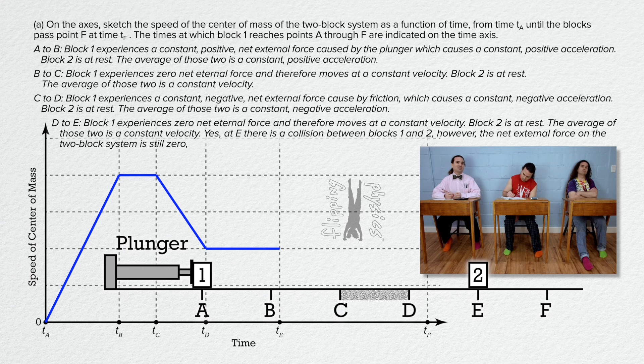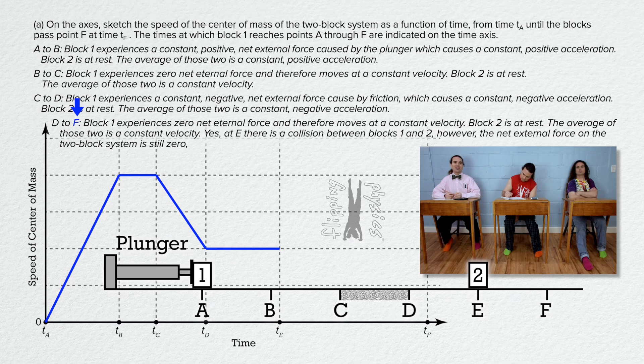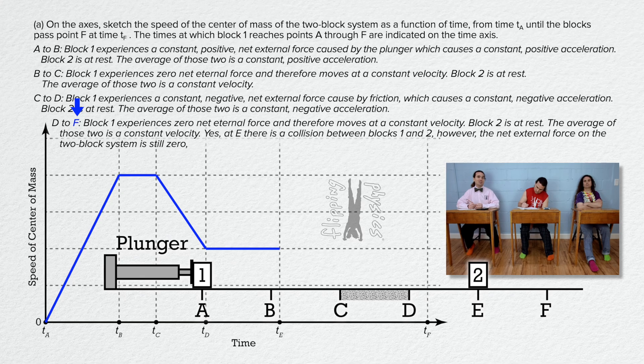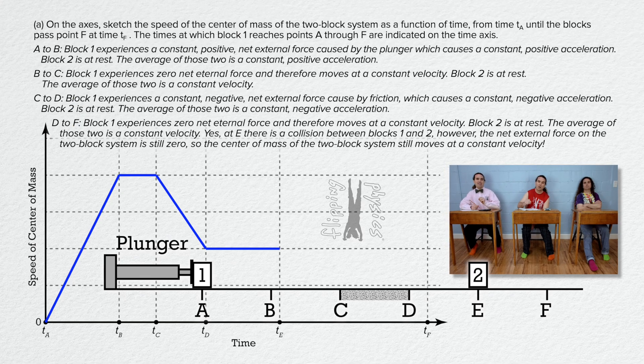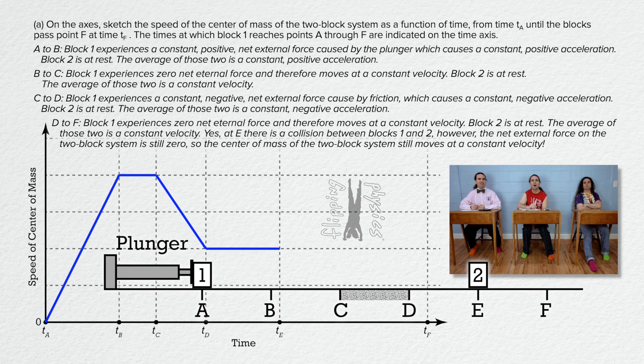Those two forces are internal to the system, so the acceleration of the system all the way from D to F is still zero even during the collision. So the velocity of the center of mass of the two block system is constant from D to F. Draw a horizontal line from time D all the way to time F.